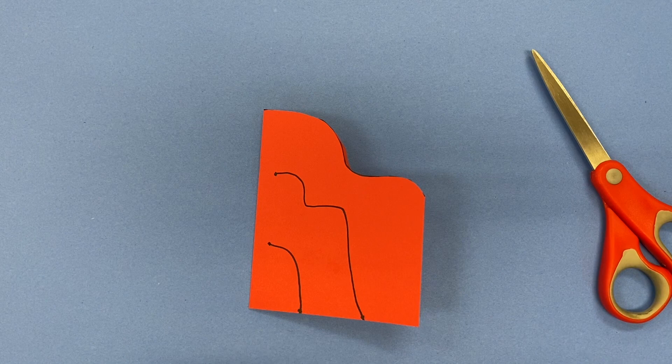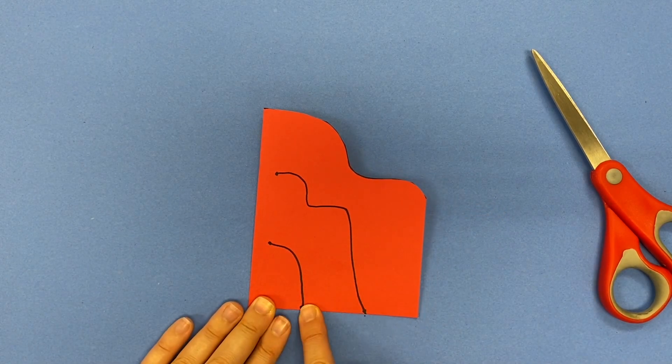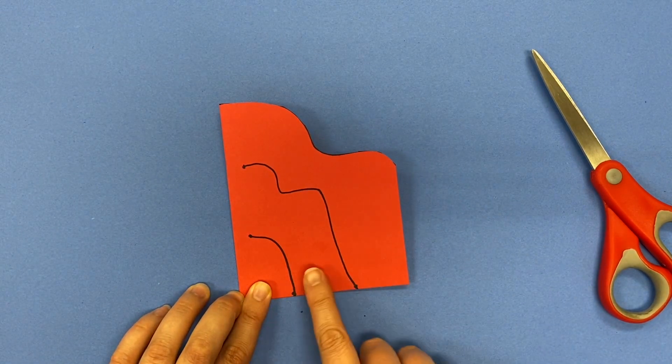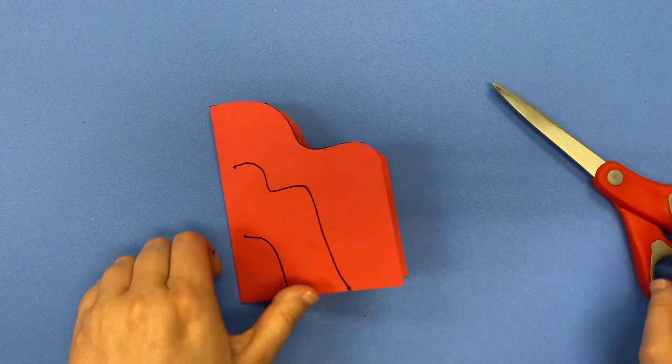So you should have two lines that go all the way to the bottom, but they do not touch the folded side of your Stabile. Once you have that, then you are going to take your scissors and you're going to cut on those lines.